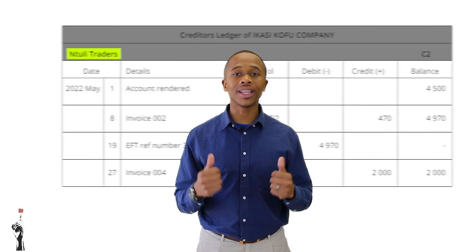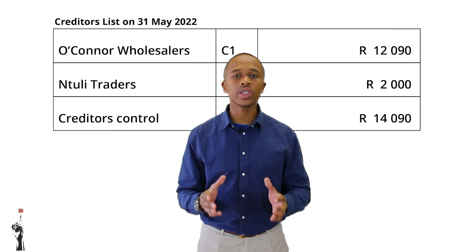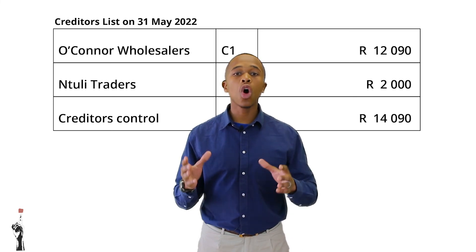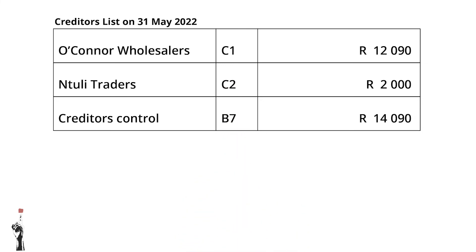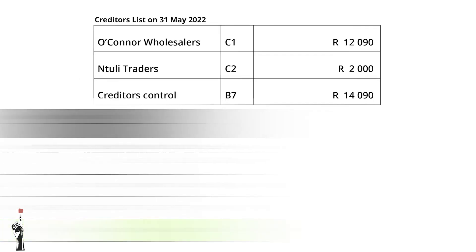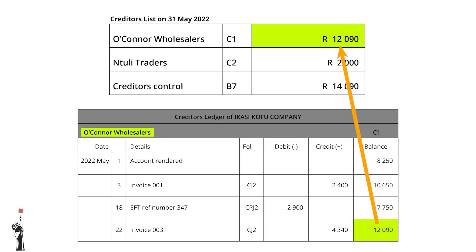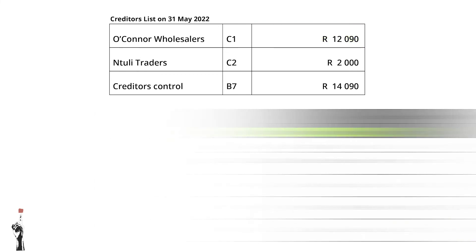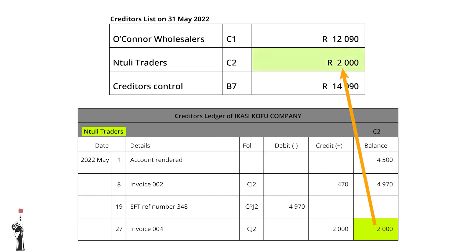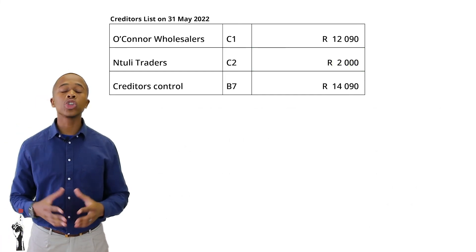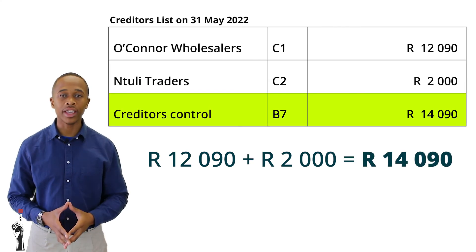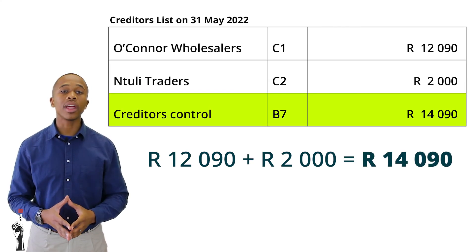Next we will be looking at the creditors list, which is a summary of the money that Ikasu Kofu Company owes its creditors. We will use the last balance of each creditor as this is the final balance IKC owes. IKC owes a total of R14,090 to its creditors — this is the final amount that is viewed on the table.